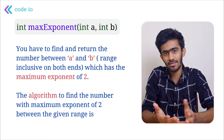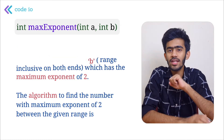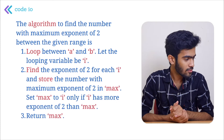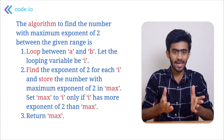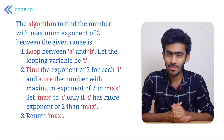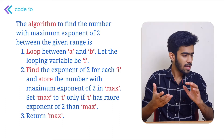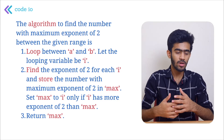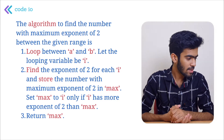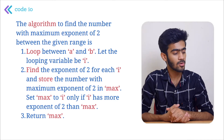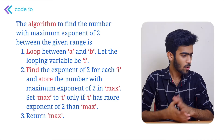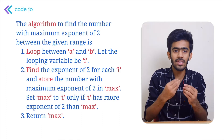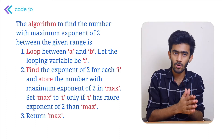The coding part is going to be really easy. The algorithm says: loop between a and b, let the loop variable be i — so we are traversing from a to b. Find the exponent of 2 for i and store the number with maximum exponent of 2 in max. Set max to i only if i has more exponent of 2 than max, and return max. The exponent of 2 means how many times we are able to divide a number by 2 perfectly.